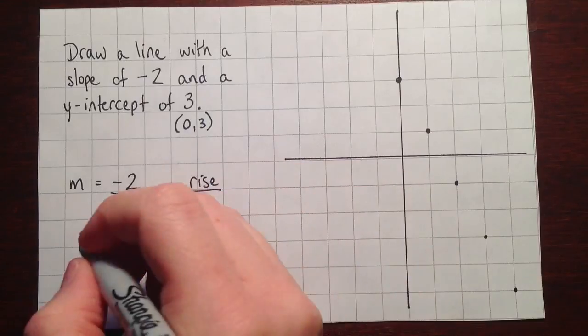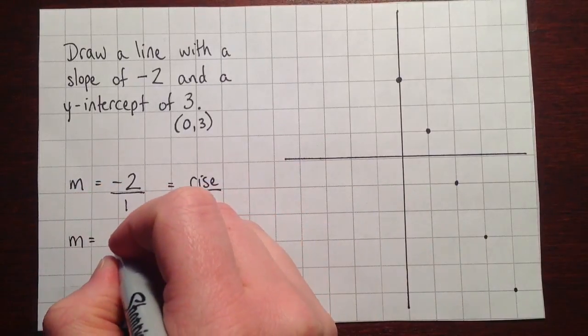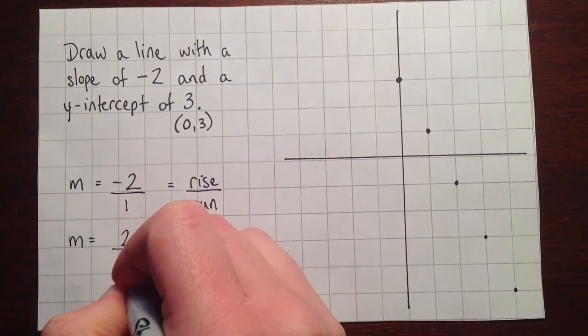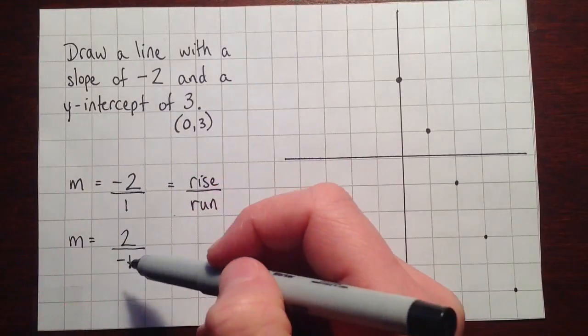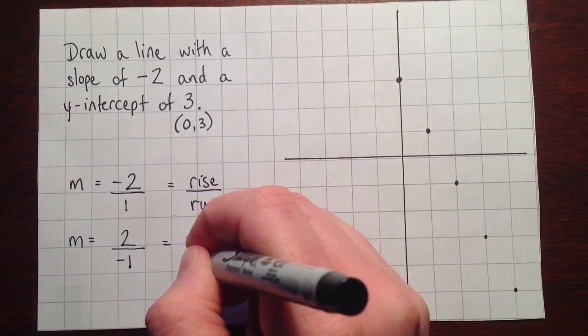Now, an interesting thing to note is that we could also write negative 2, as we can write it as 2 over negative 1. Because we can have the negative sign in a fraction on the top or the bottom, and it doesn't matter.